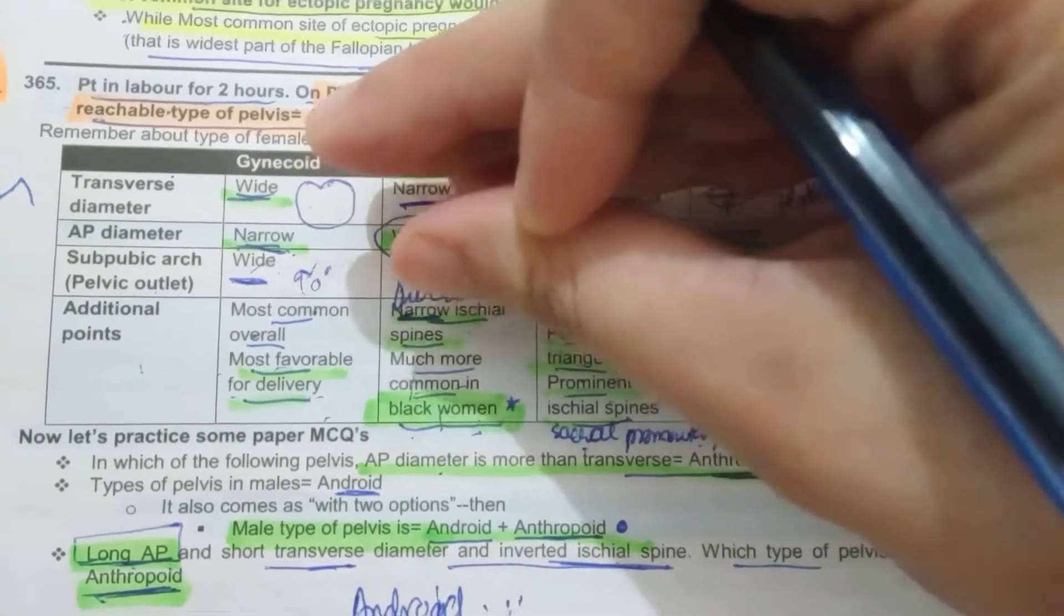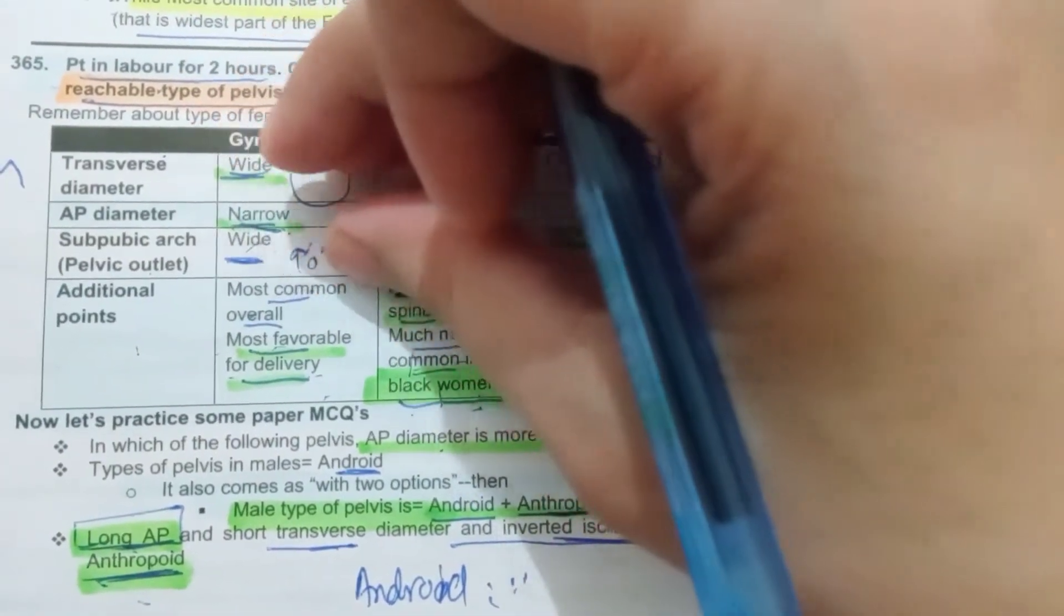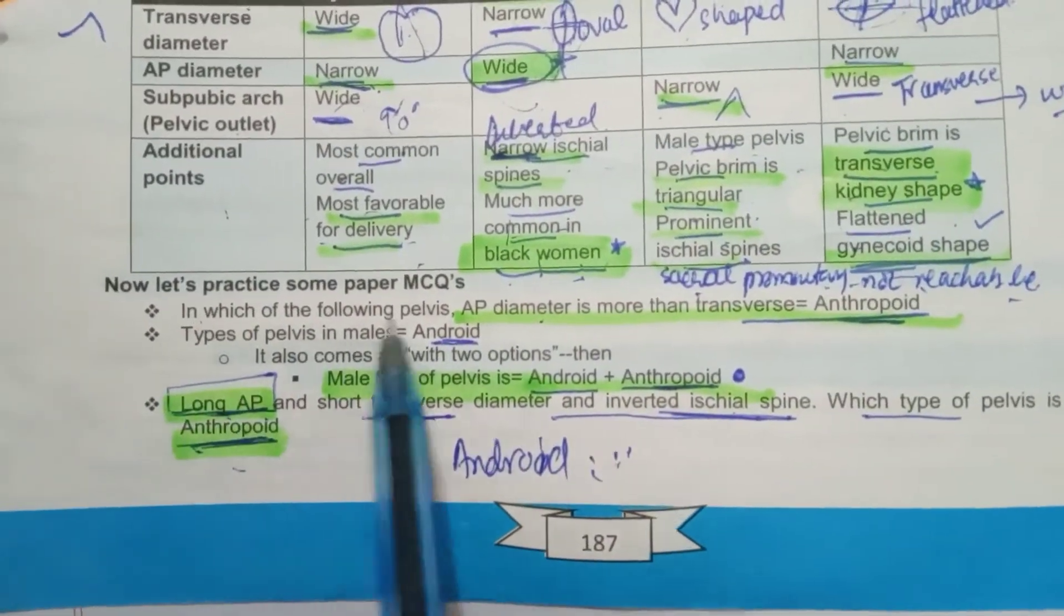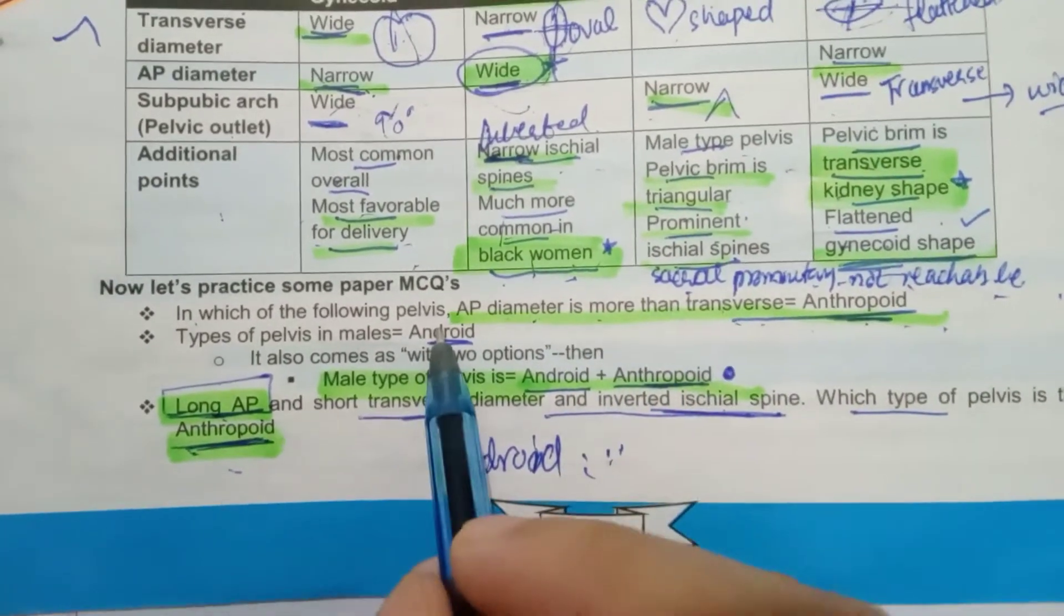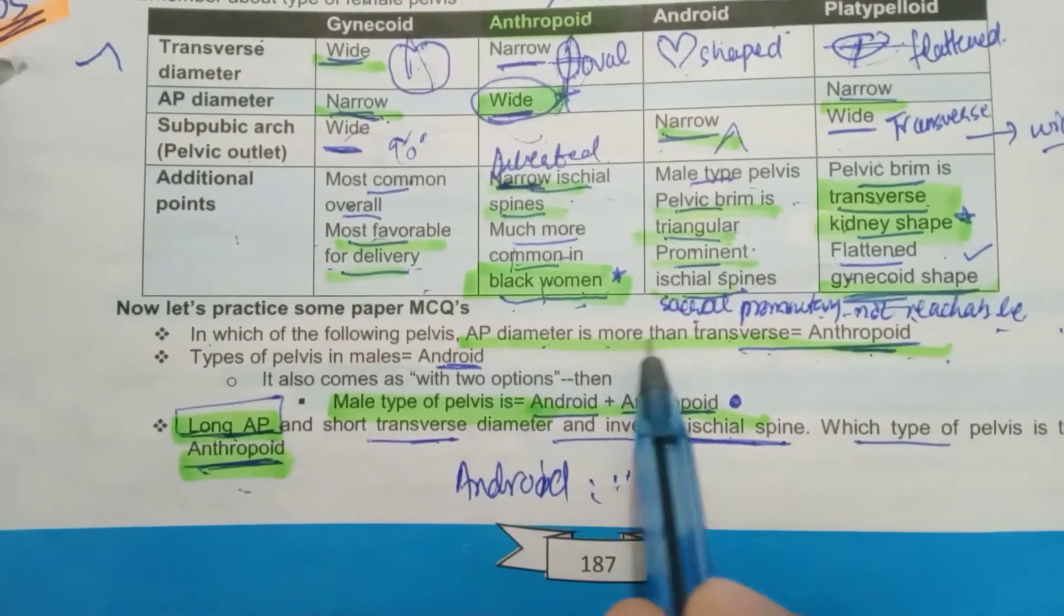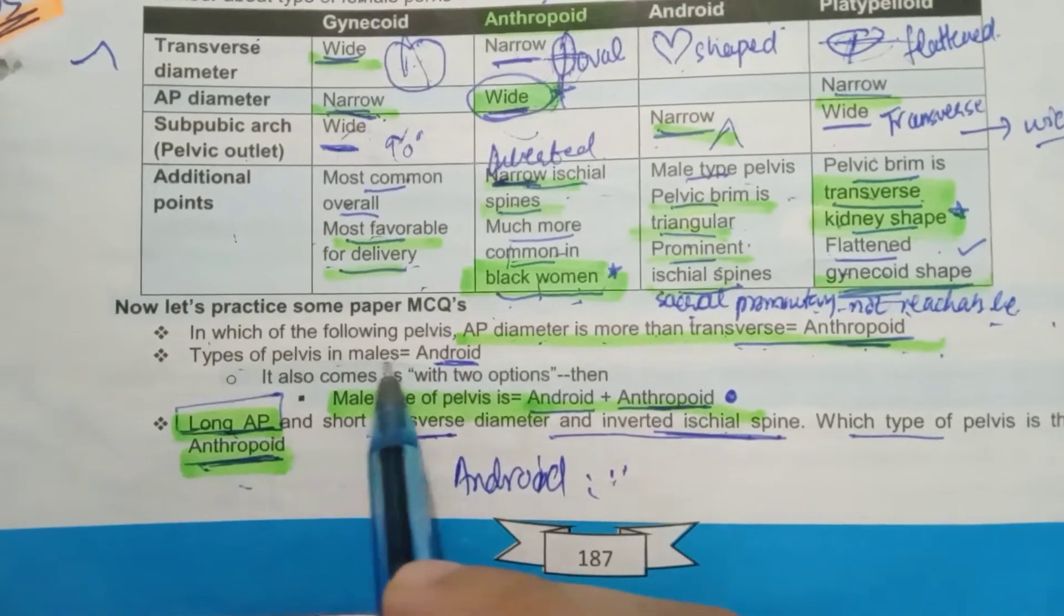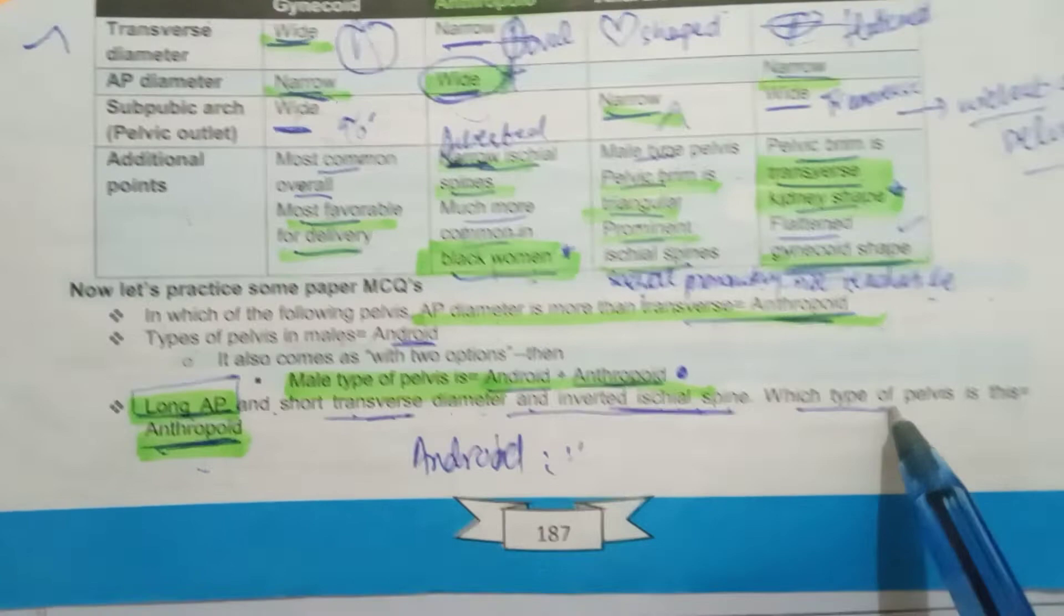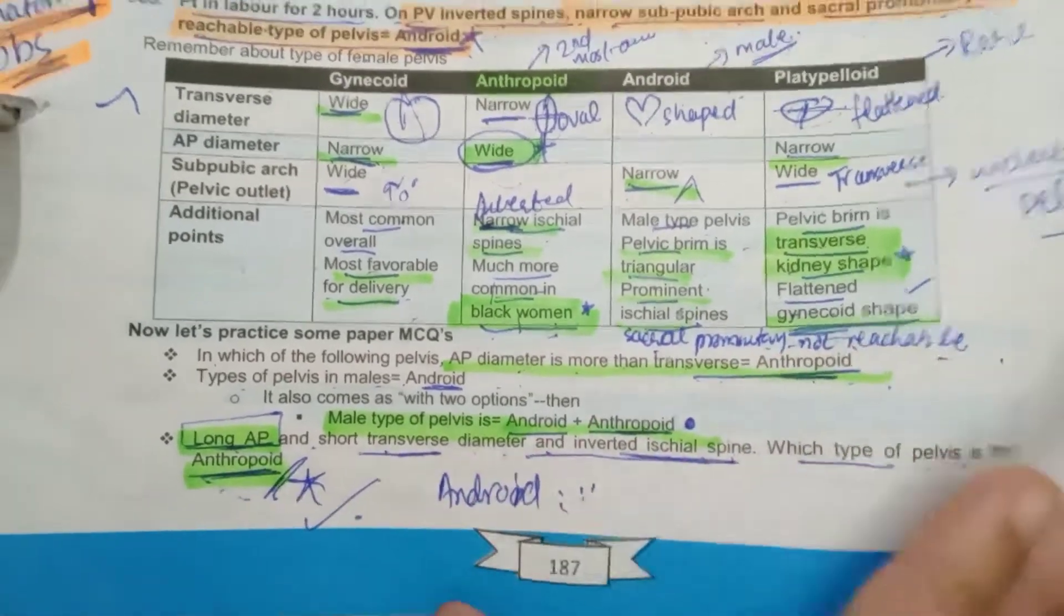If you take this thing and press it like this, and this side will expand and compress it, this will become platypelloid pelvis. It is a rarest type of pelvis. In which of the following pelvis AP diameter is more than the transverse? Anthropoid. In the rest, the transverse is wider than AP. And the widest is the transverse. Types of pelvis in males: Android. Long AP and short transverse diameter and inverted ischial spines - which type of pelvis? Anthropoid. Long AP is the clue for choosing anthropoid pelvis.